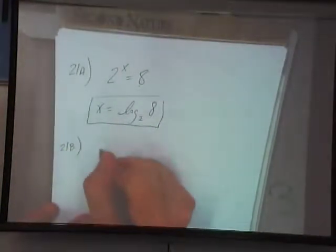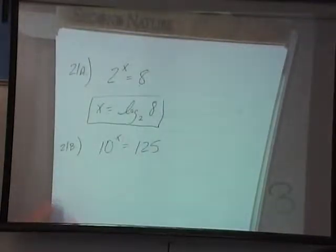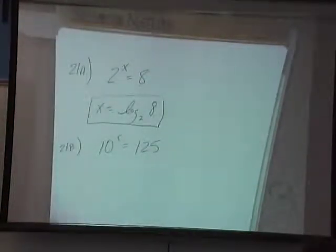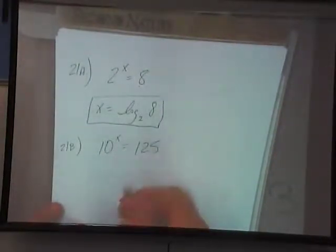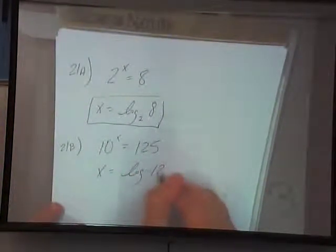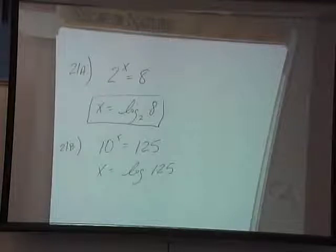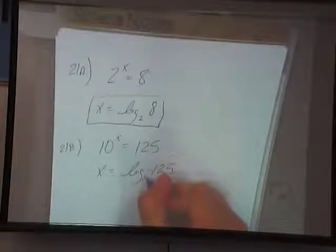21b, same thing. 10 to the x power equals 125. Move the base over and make it a base with a 125. So we end up with x equals log base 10 of 125. And if a log doesn't have a base, that means 10? It's automatically 10. So I don't have to write it or I could write it, they don't matter.